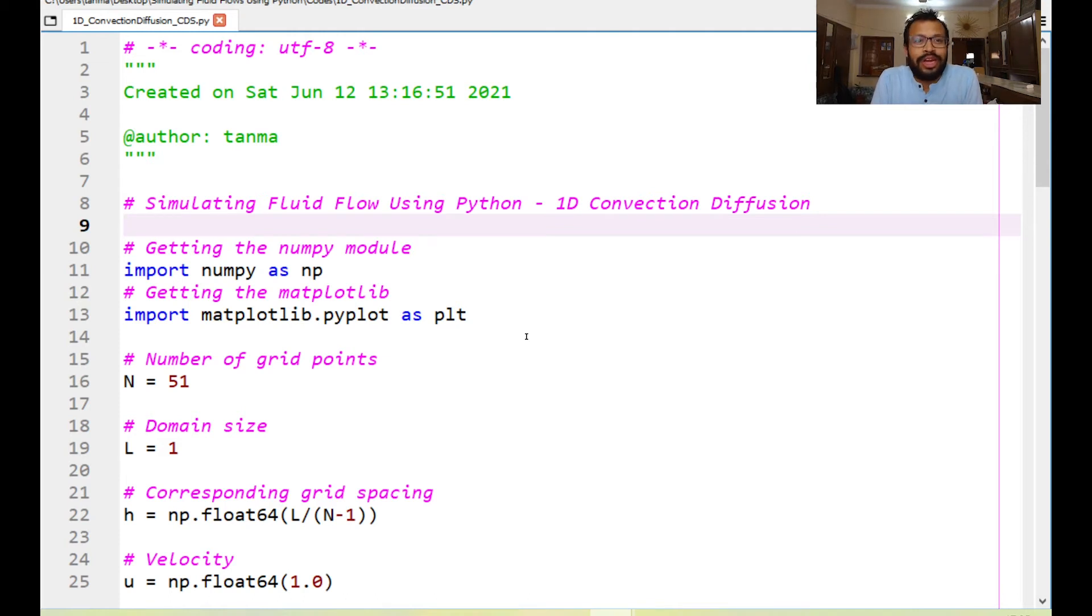Today we are going to look at how to write the one-dimensional convection diffusion problem using the central differencing scenario. So the code that you are looking at right now we would be looking at that. I will demonstrate you how that code works and if you had written your own solver what could be the possible works. So without wasting any further time let's get started.